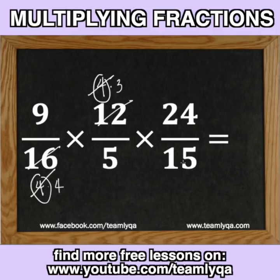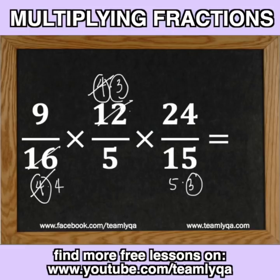Over here, 15 is 5 and 3, right? And you have a 3 right here that you can pair with it — so you can cancel that as well. What we're doing here is basically: anything that appears on top and also on the bottom, you can cancel it.